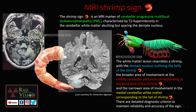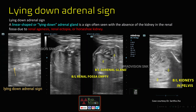The medial narrower area of involvement in the medial cerebellar white matter corresponds to the tail of the shrimp. Here you can also see this is the head, this is the body, and this is the tail of the shrimp — that typical Mrs. Shrimp sign seen in cerebellar progressive multifocal leukoencephalopathy.